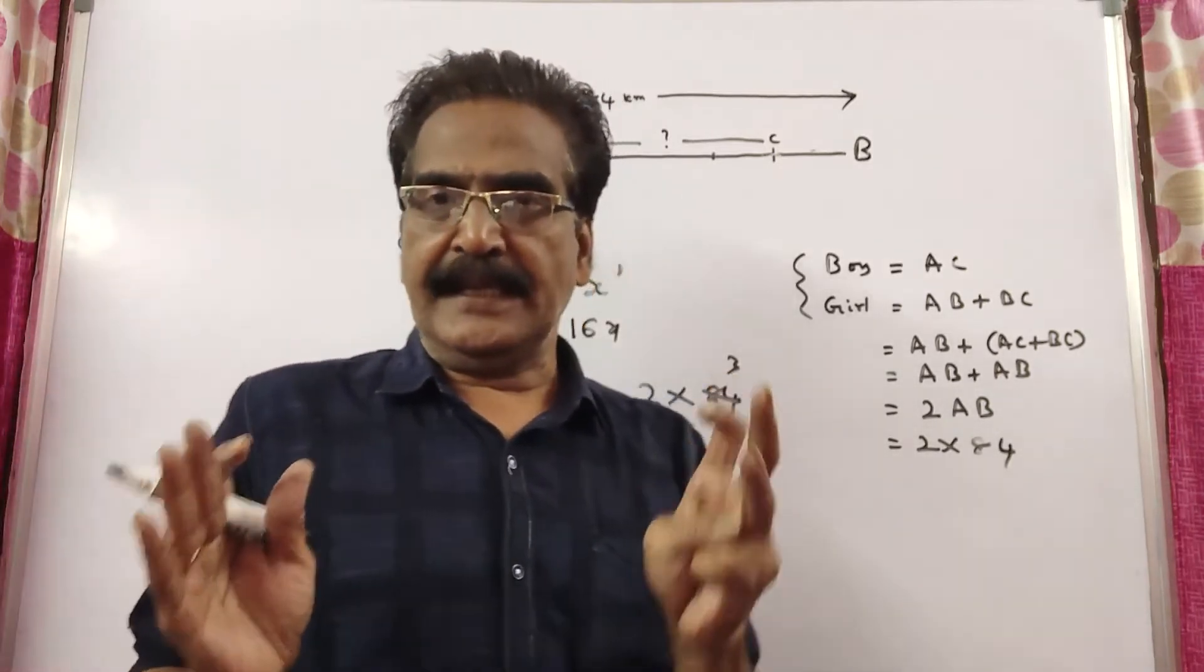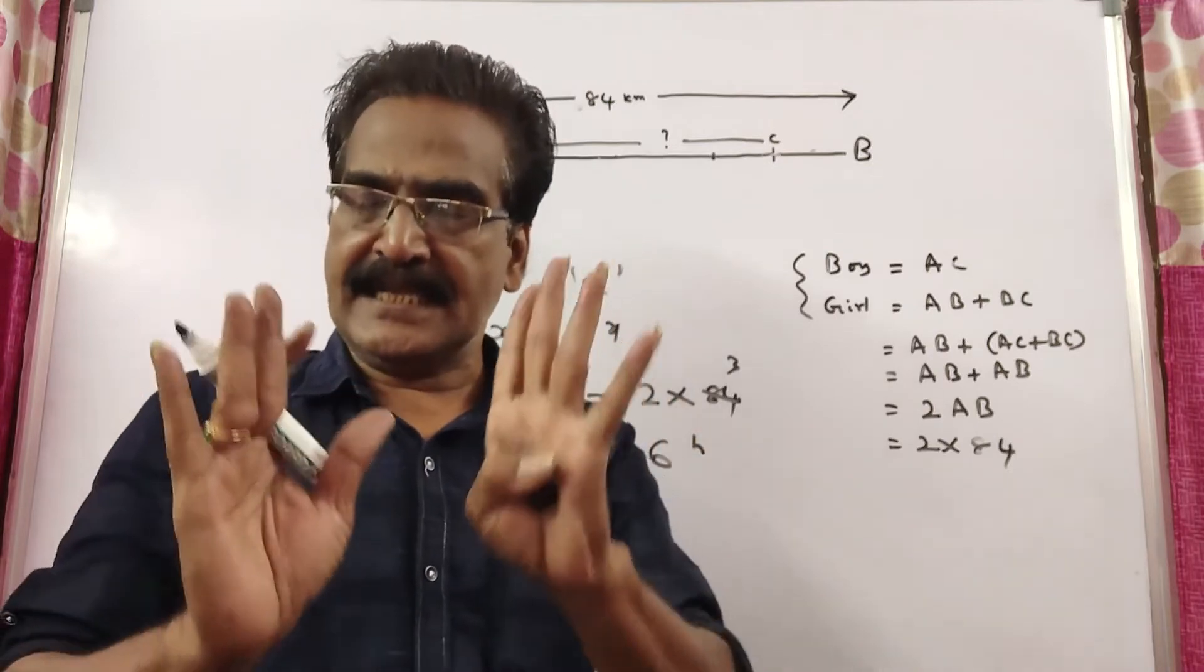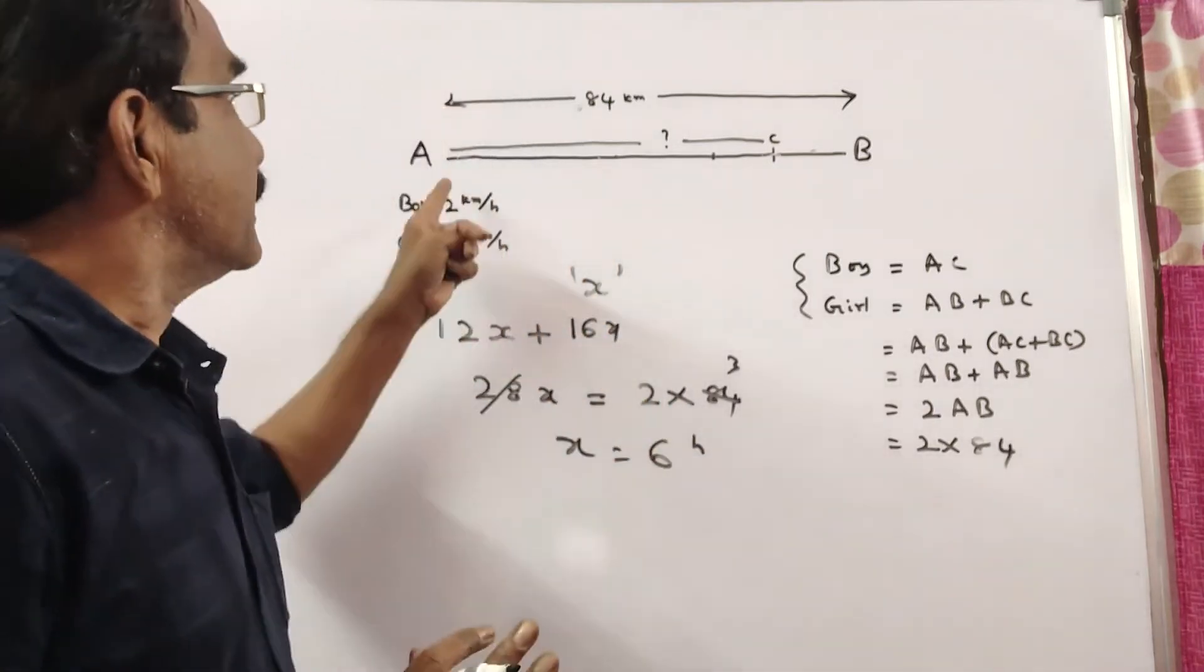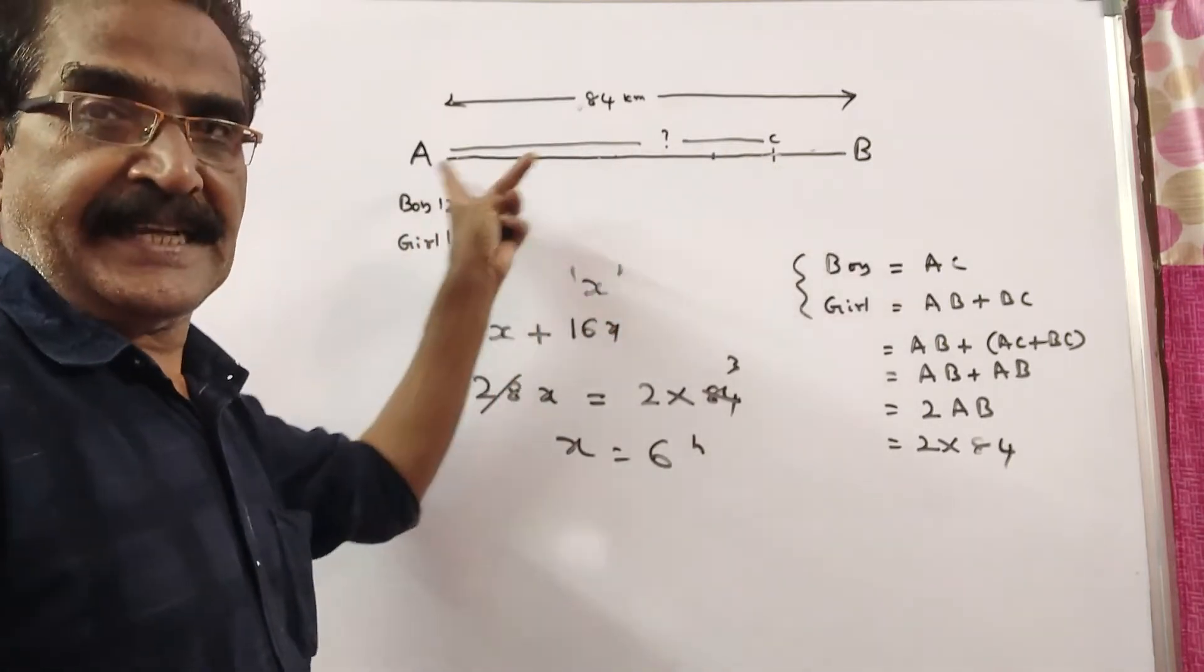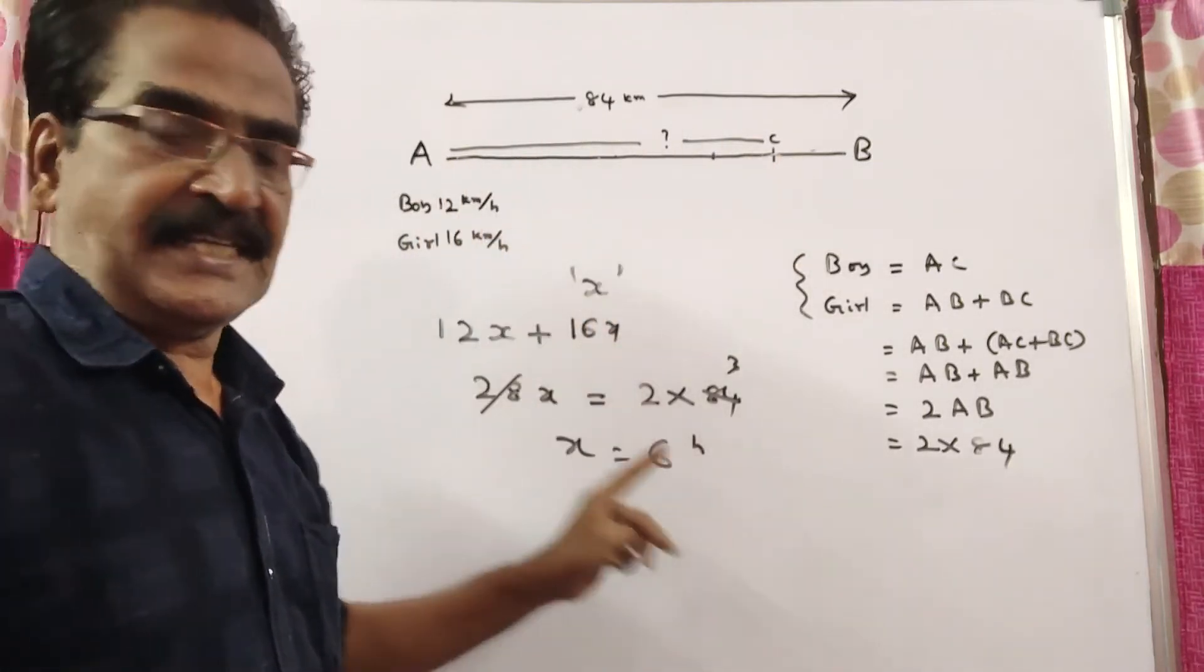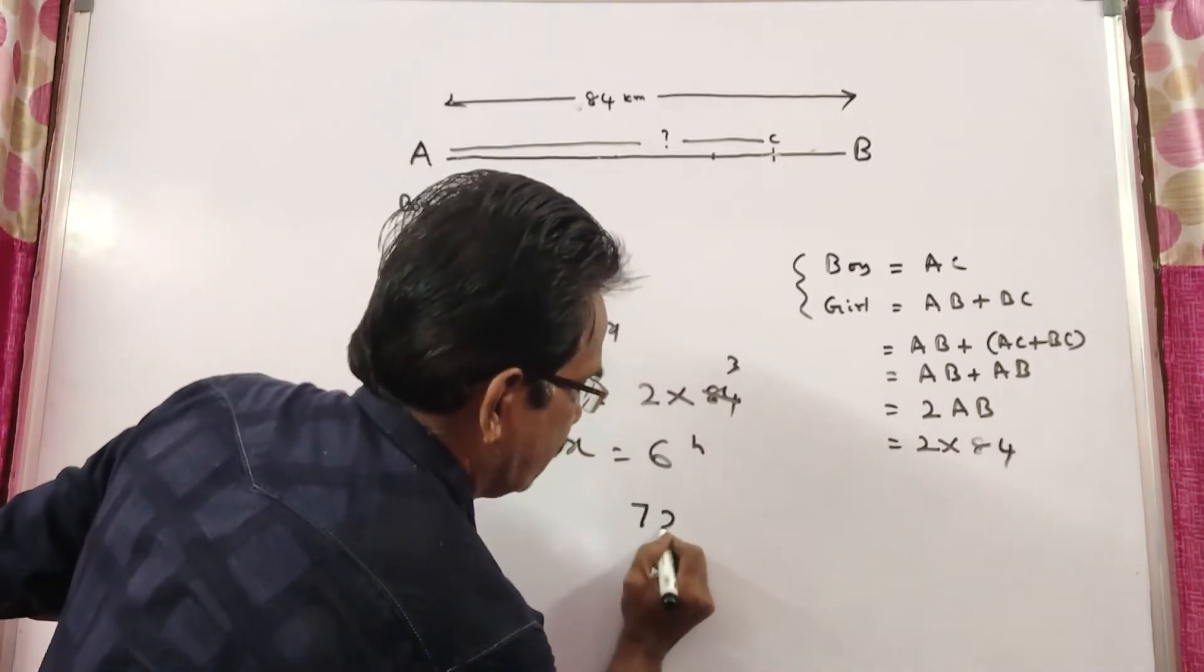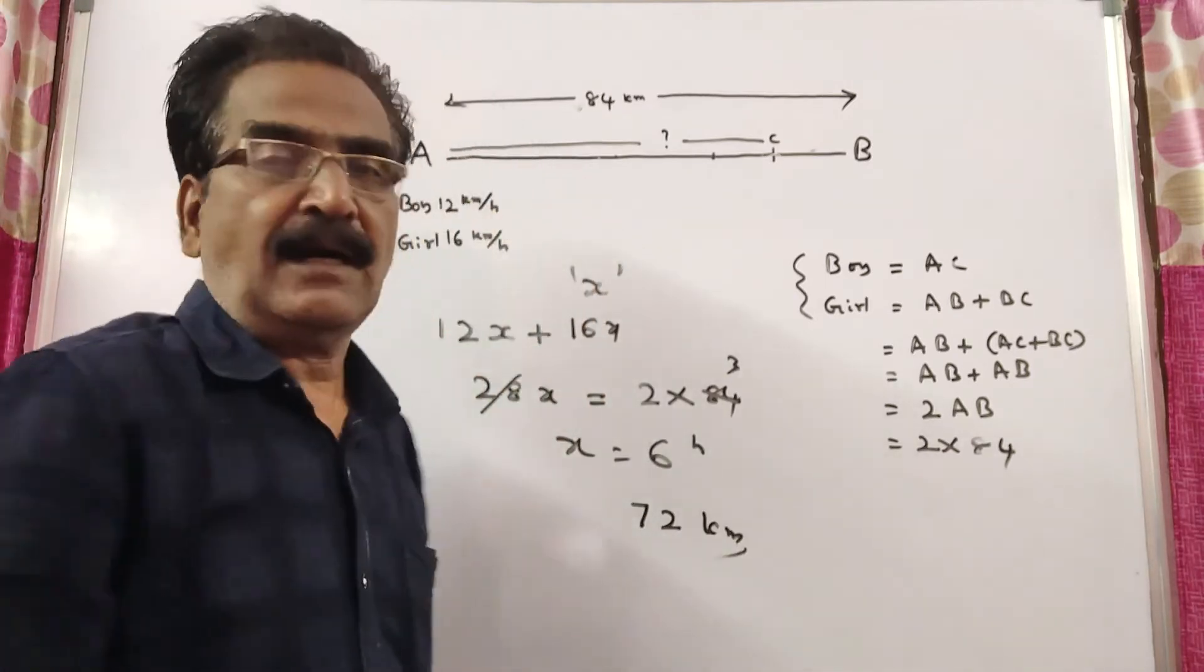They meet 6 hours after they started. In 6 hours, the distance travelled by the boy is AC: 12 into 6 equals 72 kilometers. 72 kilometers is your answer.